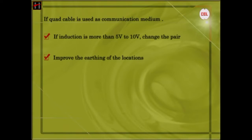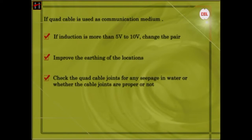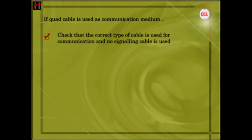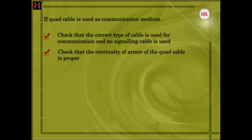Improve the earthing of the locations. Check the quad cable joints for any seepage of water or check whether the cable joints are proper or not. The armour of the quad cable can be earthed separately. In case the problem is not rectified, check that the correct type of cable is used for communication and no signalling cable is used. Check that the continuity of the armour of the quad cable is proper, and check and verify the following parameters.